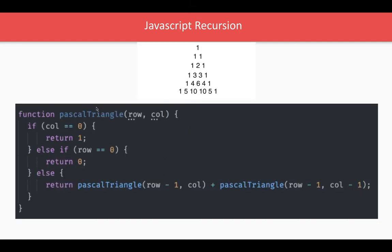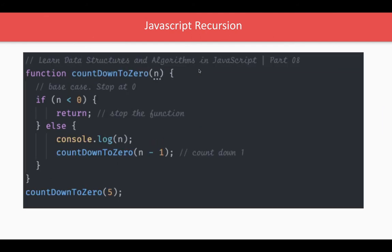Similarly, there is Pascal's Triangle — another basic example. It prints values: if column is zero and row is zero, print one; if row is zero, print zero. We run a loop, and if the condition is not matching, we pass row minus one and column, or row minus one and column minus one, to build that particular structure.